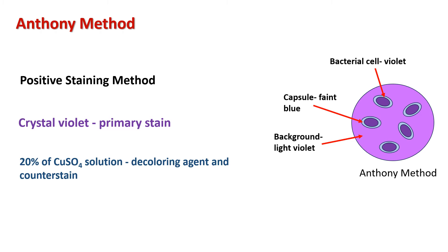Anthony's method is a type of positive staining method which stains the capsule along with the bacterial cell. This method makes use of two reagents: crystal violet as a primary stain and a 20 percent copper sulfate solution as a decolorizing agent and counterstain. Crystal violet stains the bacterial cell and background; the copper sulfate solution stains the non-ionic capsule.